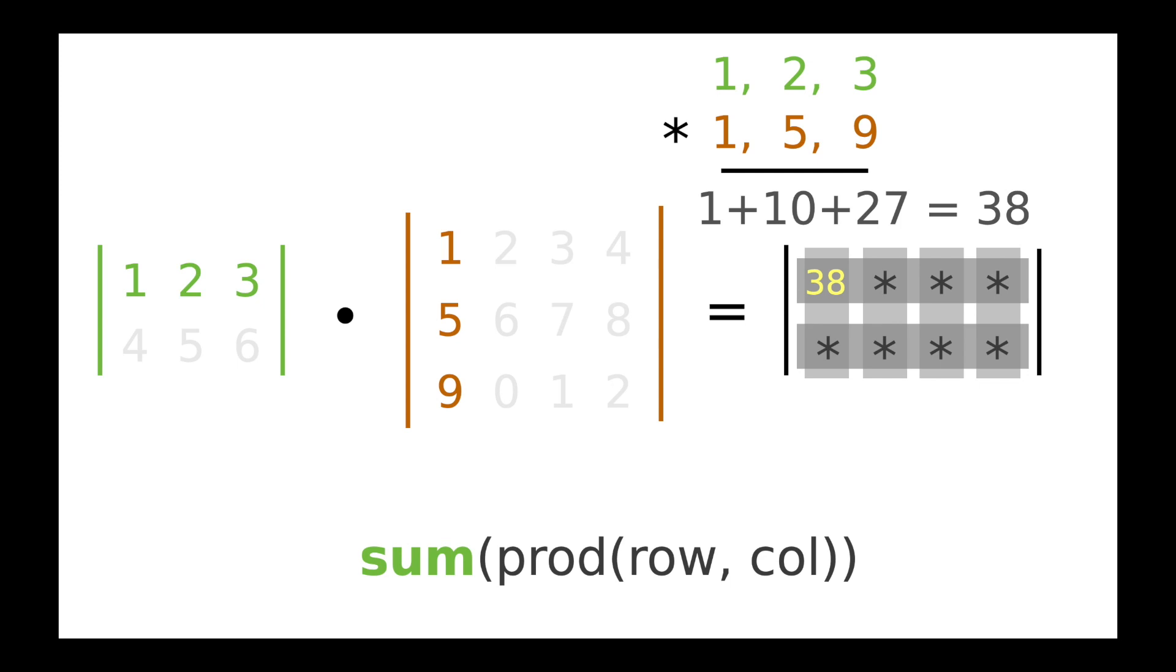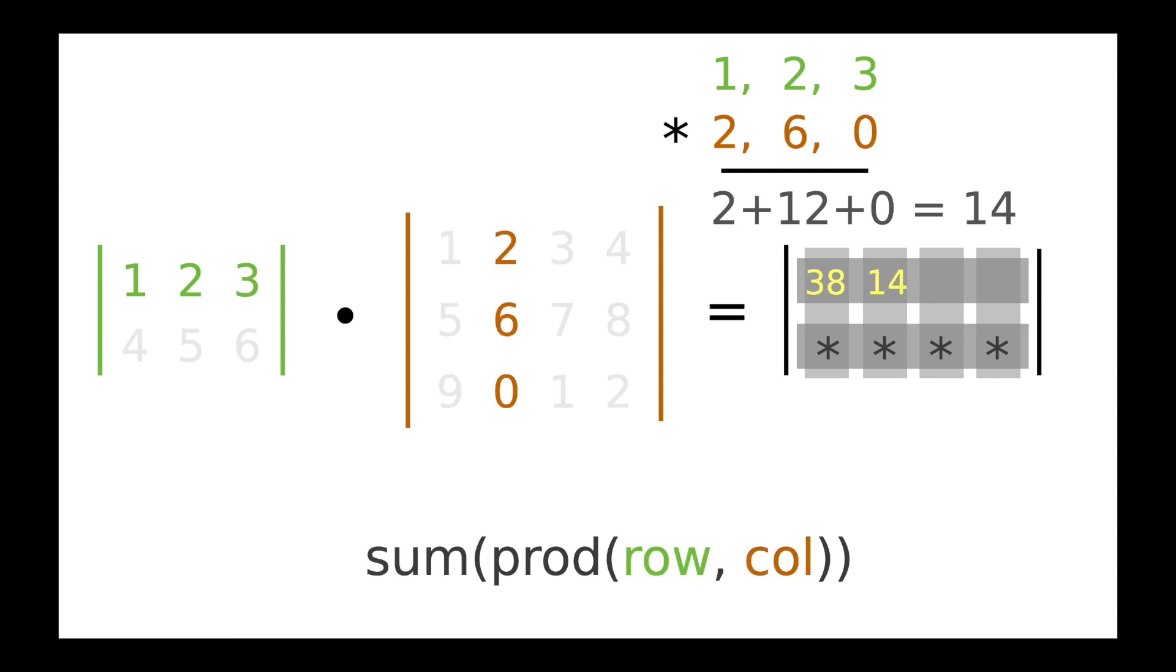That means we're going to stay in that upper row, so that left hand 1, 2, 3 is going to stay the same. And then we're going to shift the rows on the right hand side to the right. So rather than working with 1, 5, 9, we're going to work with 2, 6, 0. So then I just do the multiplication as before. 1×2 is 2, 2×6 is 12, 3×0 is 0. And when we add that up we get a 14.